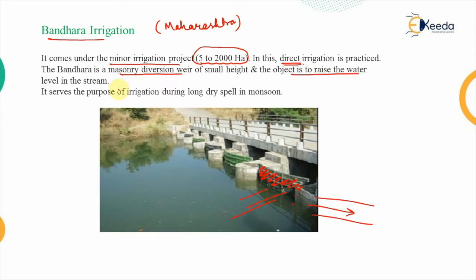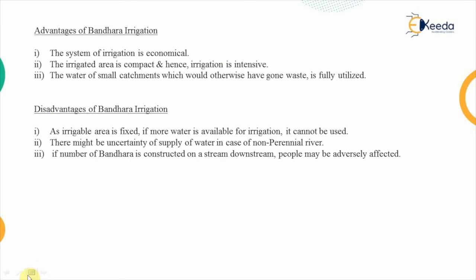The object is to raise the water level and ultimately serve the purpose of irrigation during the long dry spell when rainfall is not occurring, that is during the non-monsoon period. Since irrigation involves a number of instruments, if we can achieve the desired water level with such construction, it is an economical approach.